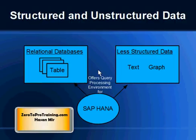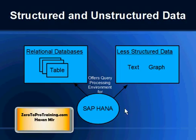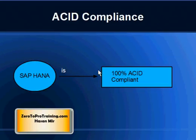SAP HANA in-memory database can be used for either OLTP or OLAP applications. SAP HANA also offers query processing for structured databases like two-dimensional tables, and it also handles less structured data such as text and graphs. Both OLAP and OLTP are structured systems.